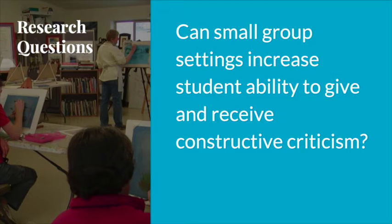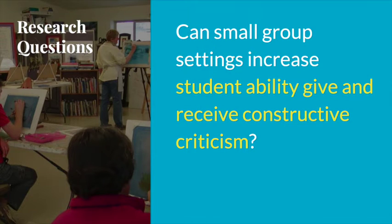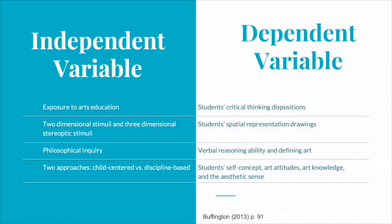This allows for both the cause and the effect to be listed in the question. A good way to think about research questions for quasi-experimentation is: Can the change you want to make affect the learning or disposition you want to adjust? When developing your research question, you must determine what you want to change and what will cause the change. The cause and effect relationships are defined by independent and dependent variables.